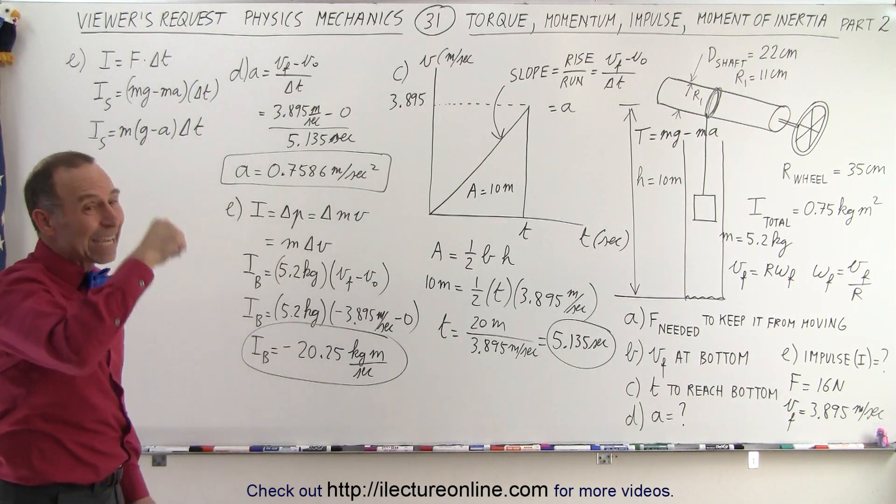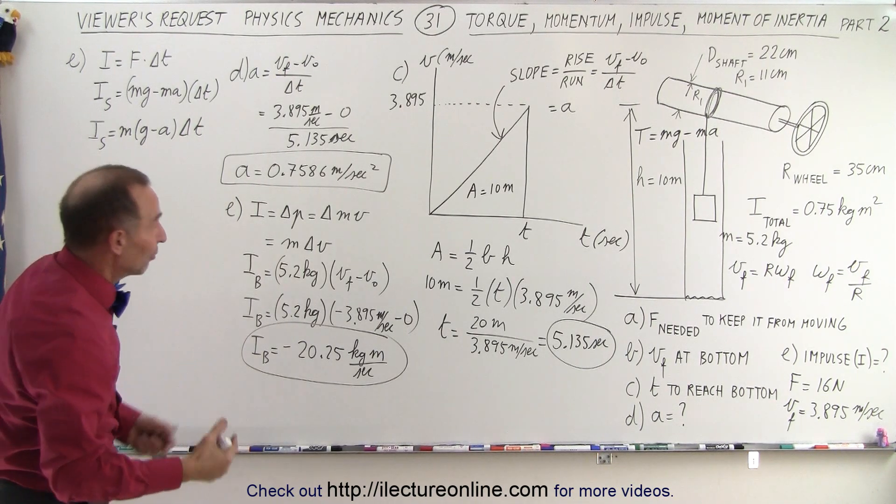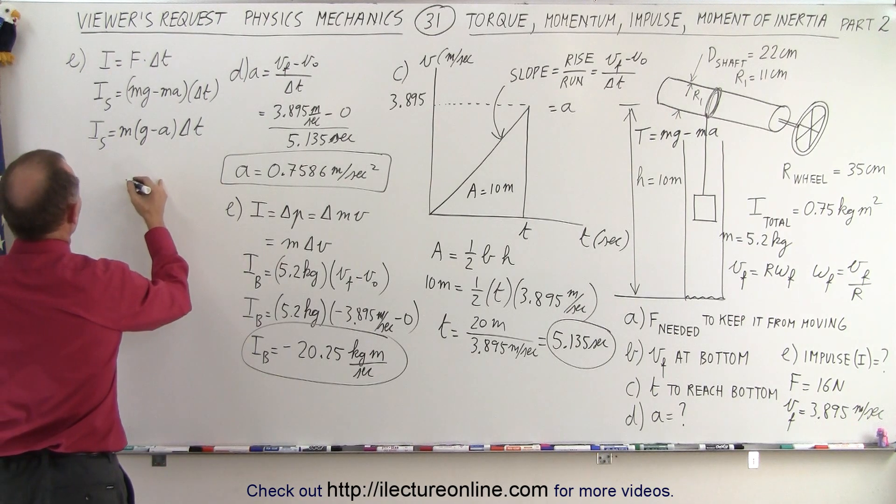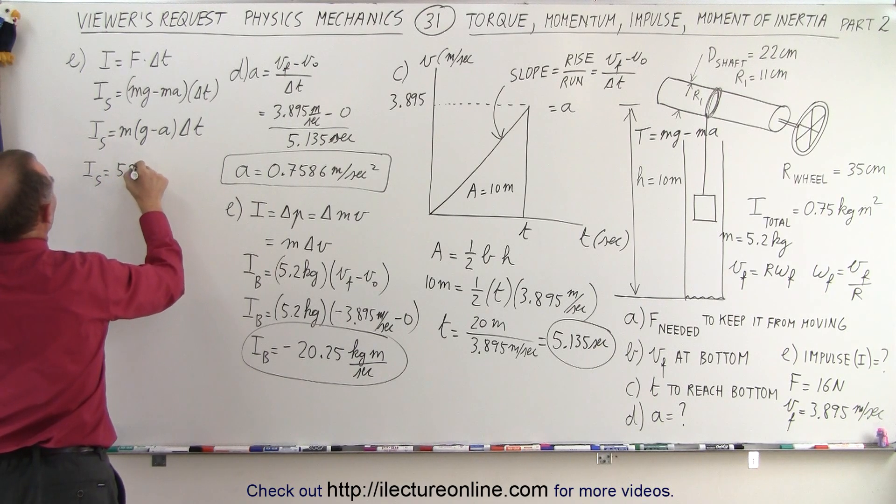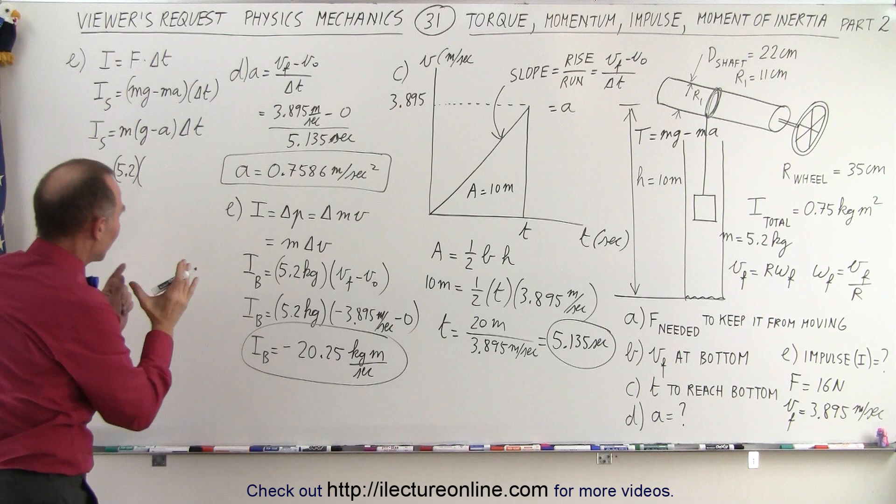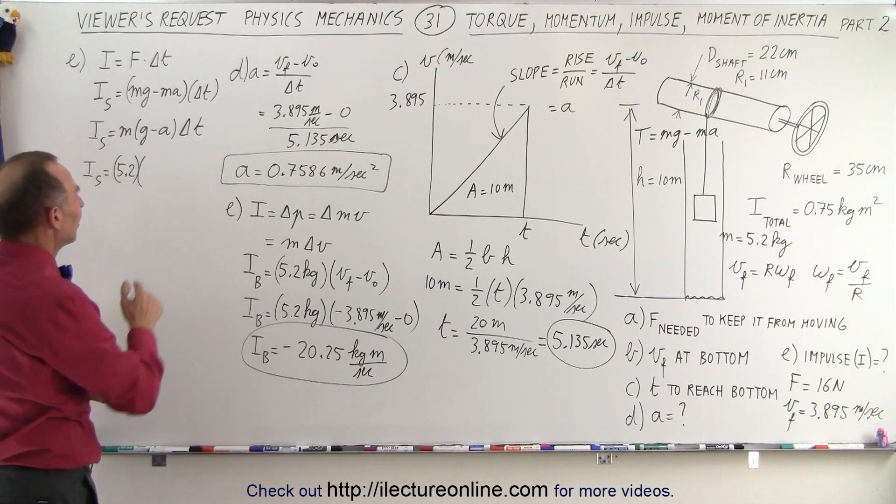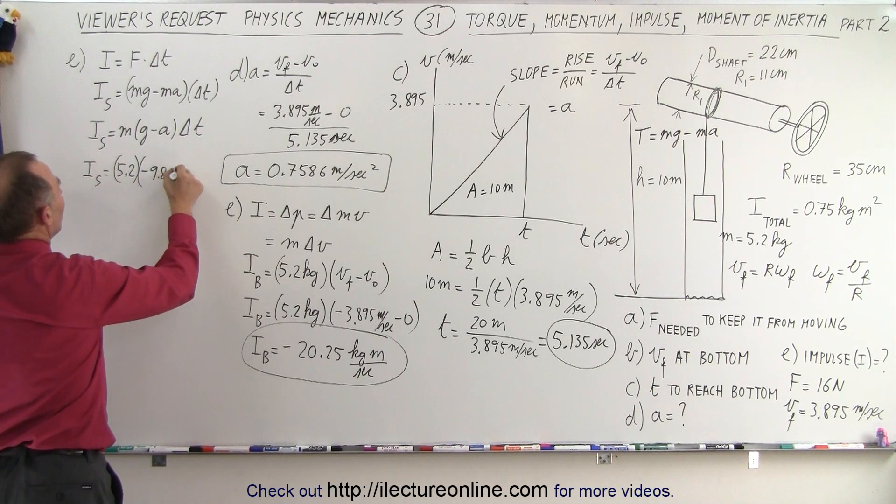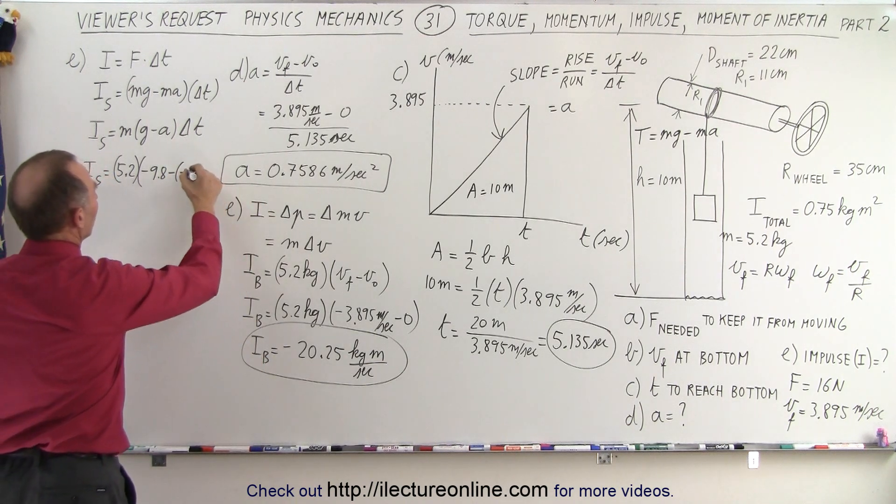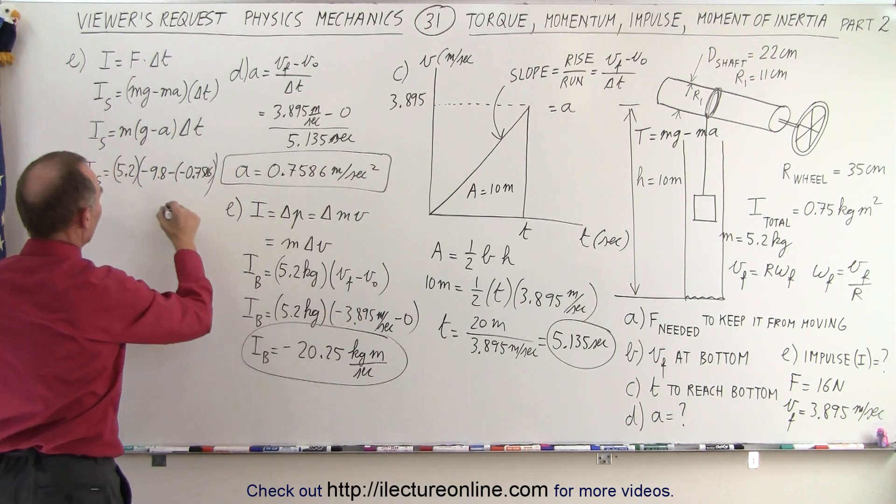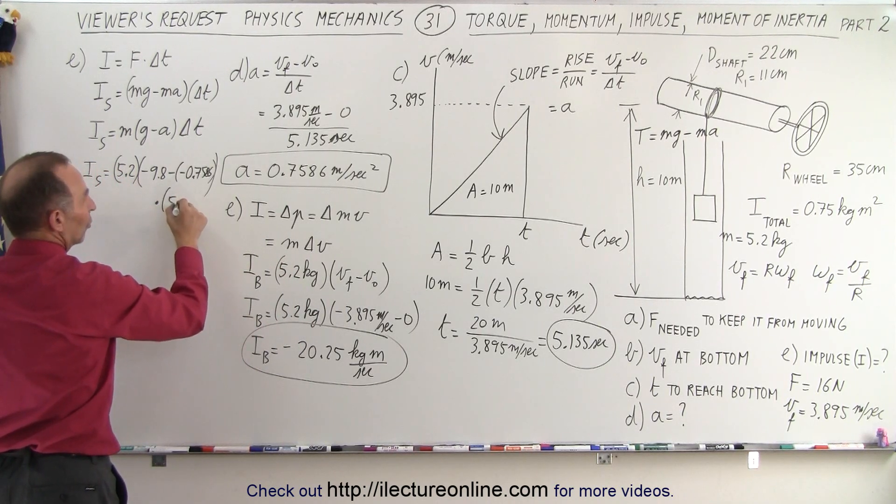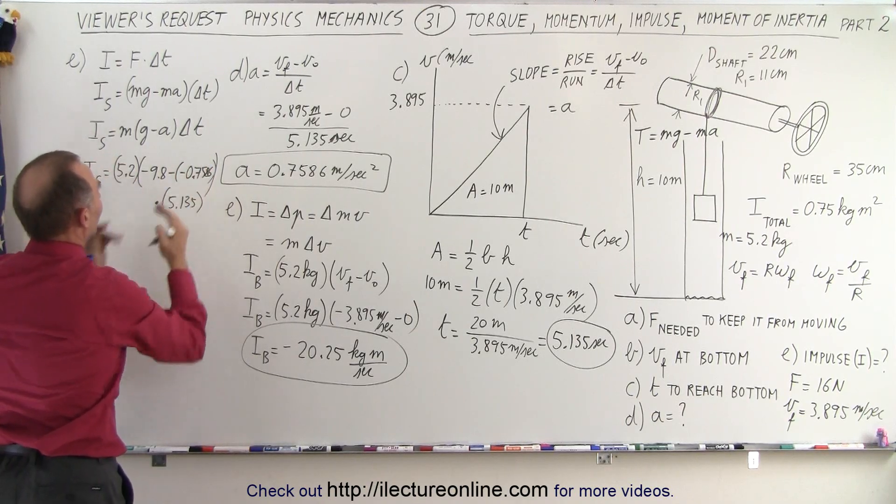And the force is in a negative direction, so we also get a negative impulse, if you want to think about that that way. So we have i of the shaft is equal to 5.2 kilograms. I'm leaving the units off because I'm running out of space. g is a minus 9.8 minus a minus a, which is 0.7586. And then I multiply that times delta T, which is times 5.135. So it's 5.2 times this times this.